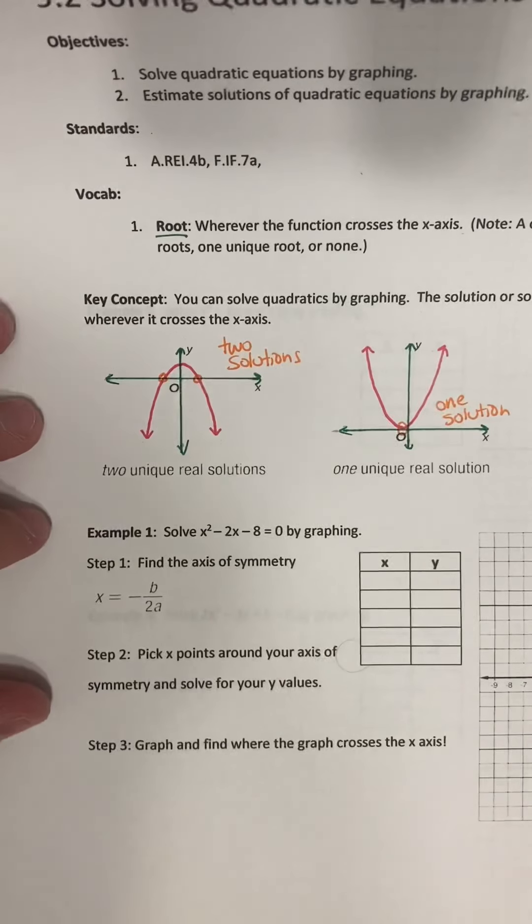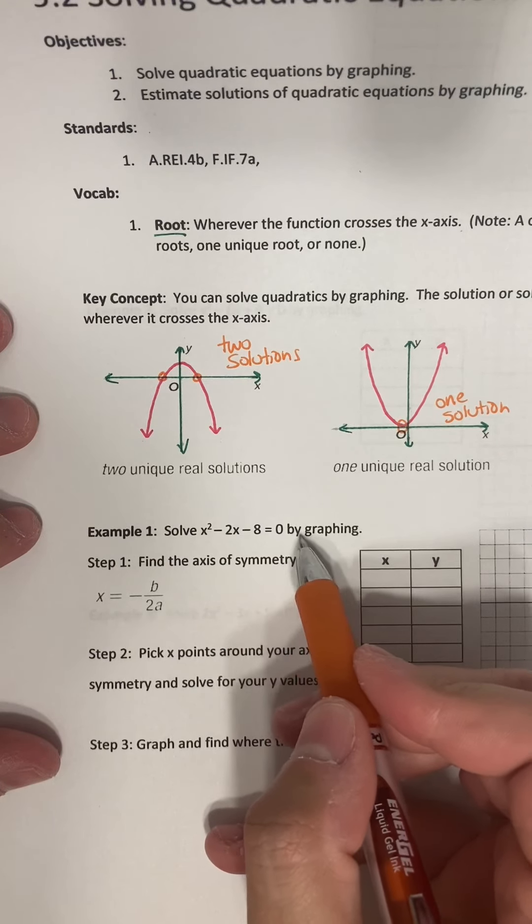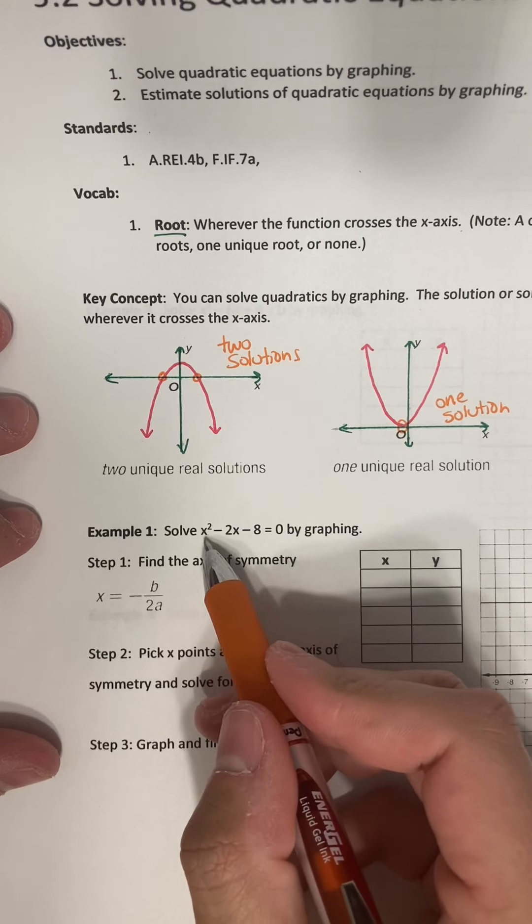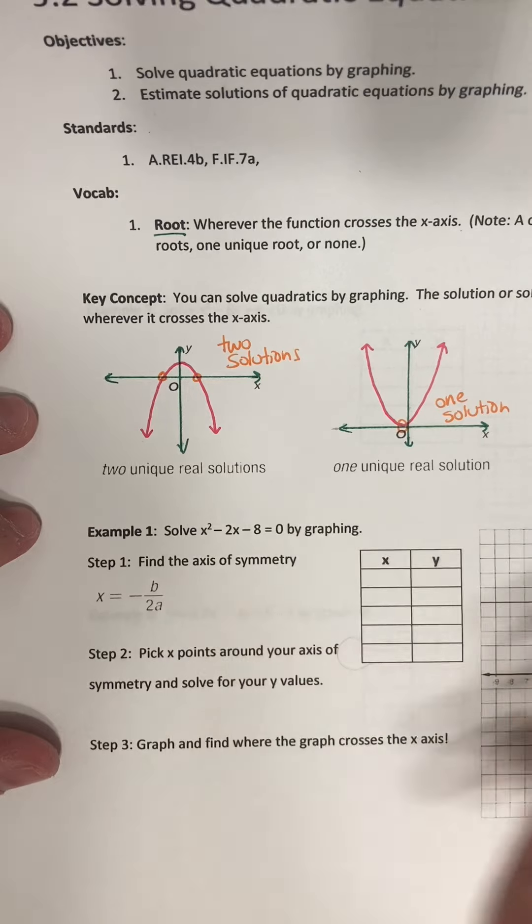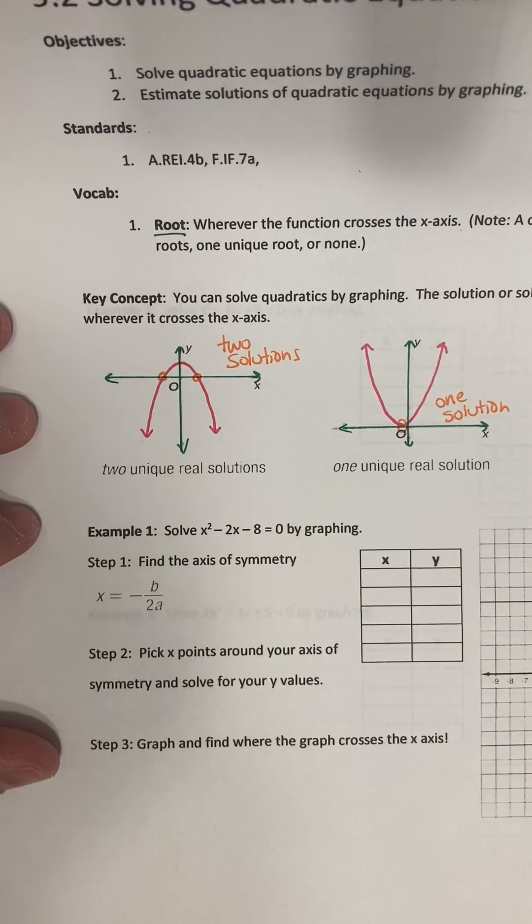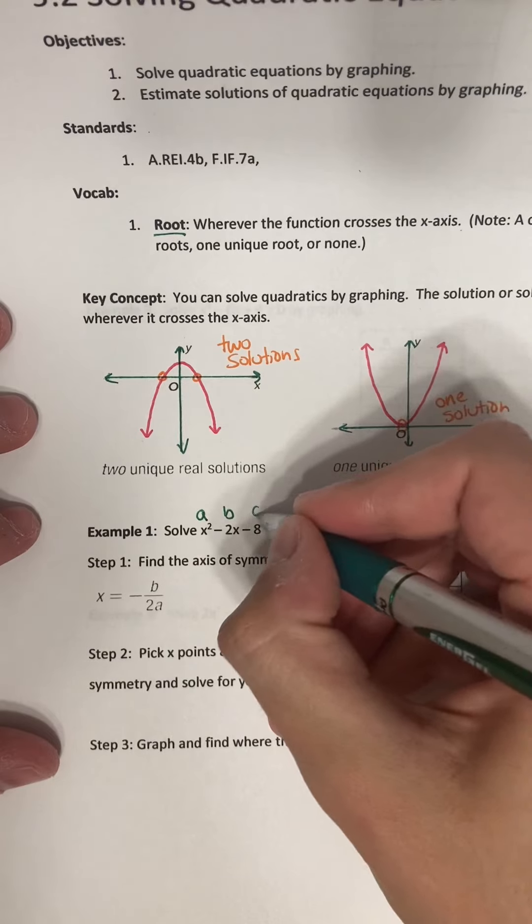Okay, so it says to solve x squared minus 2x minus 8 equals 0 by graphing. So we want to try and find a value of x where when we plug this in, we get 0. So first off, let's start off by doing what we did in the last video, and that's finding the axis of symmetry. So again, this is a, this is b, and this is c.